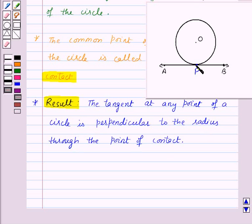Now here P is the point of contact. So this tangent will be perpendicular to the radius through the point of contact that is OP. So that means AB is perpendicular to OP.